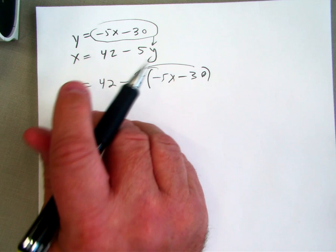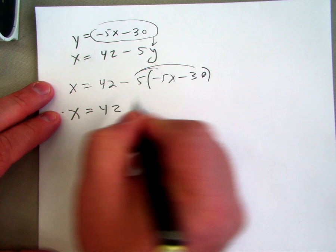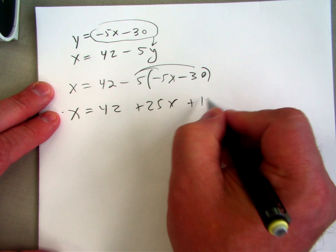I can solve this, and I get 42. I'm going to have to distribute. I've got to be careful with your distribution. I can combine like terms.